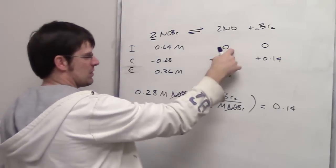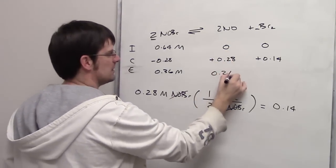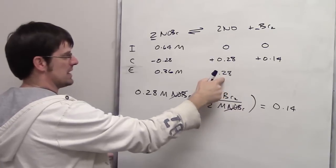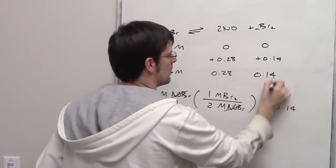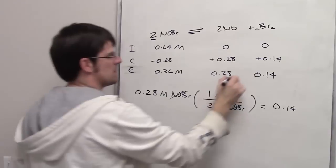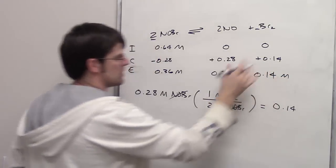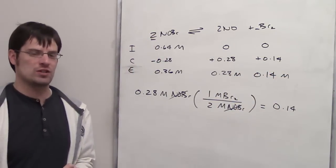Now if I take 0 and I add 0.28, that gives me 0.28 as my final equilibrium concentration. 0 plus 0.14 molar is going to be my final equilibrium concentration for bromine. And that is the answer to the question.